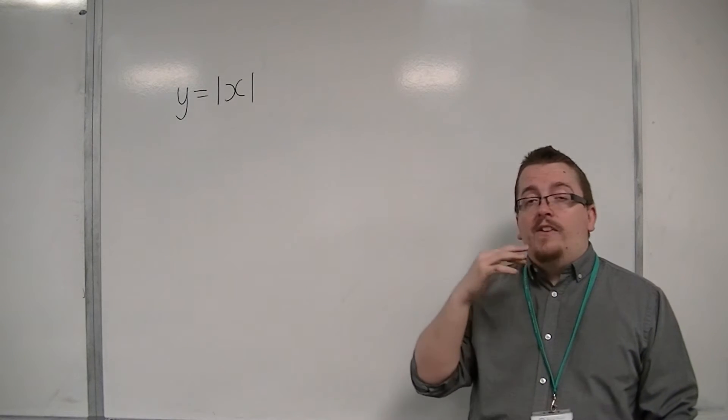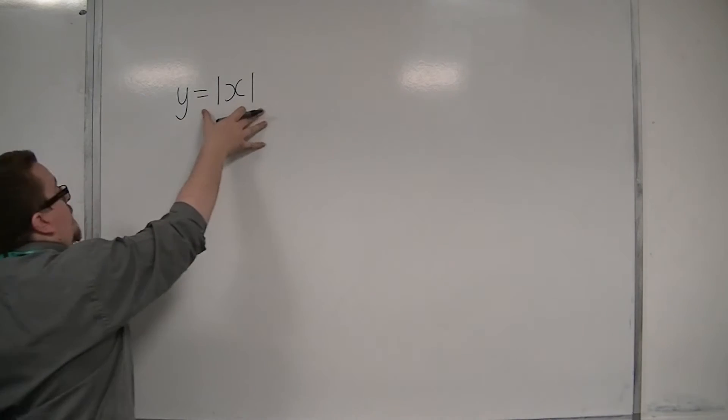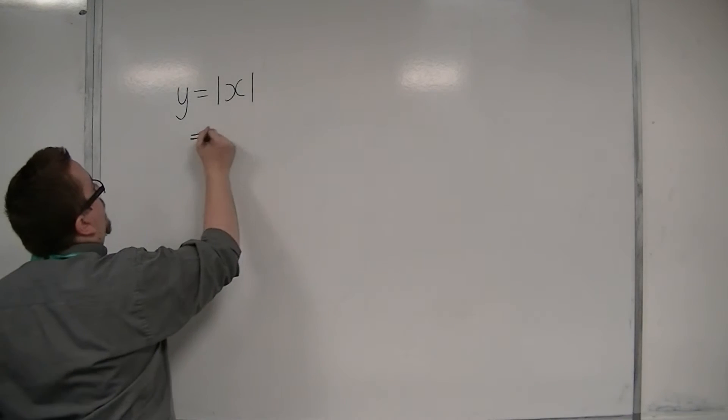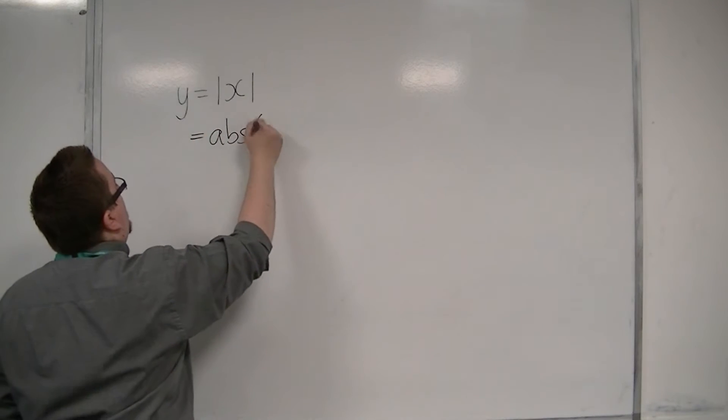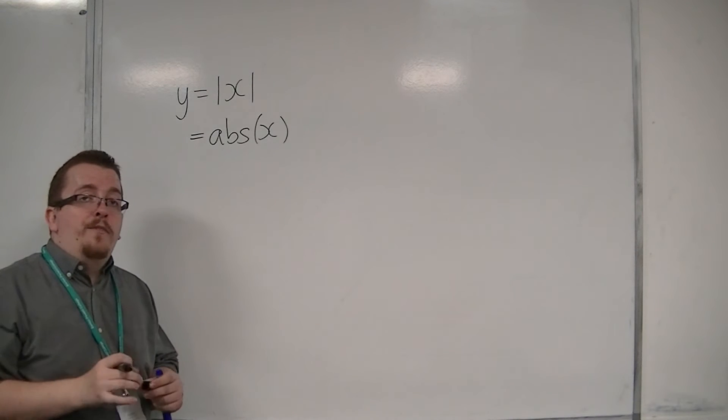They're also known as the absolute value of x. In books or in computer programming, it can also be written as abs of x, the absolute value of x.